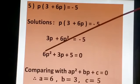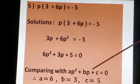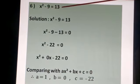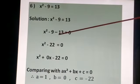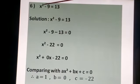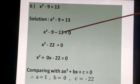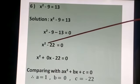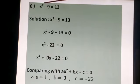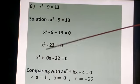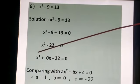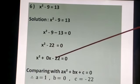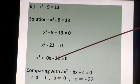X² - 9 = 13. Solution: equation copy करो. 13 left में जाएगा तो minus 13 होगा: X² - 9 - 13 = 0, so X² - 22 = 0. Middle term नहीं है तो 0X लिखेंगे: X² + 0X - 22 = 0. Compare: A = 1, B = 0, C = -22.